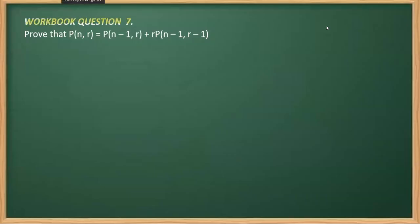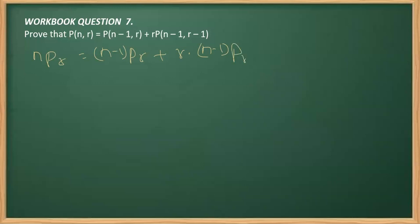This is one question taken from workbook, question number seven. This is the relation we have to prove. We can write this as nPr is equal to (n-1)Pr plus r times (n-1)P(r-1). This is what we have to prove. We can simultaneously expand the LHS and RHS to arrive at the answer.